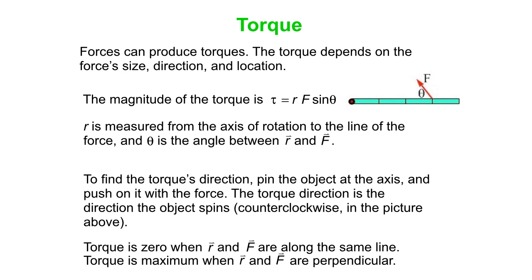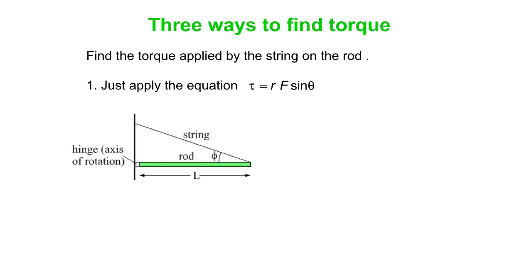Torque is zero when R and F happen to be along the same line, and you maximize your torque when R and F are perpendicular to each other. Now we're going to go over three equivalent ways to find the torque. Find the torque applied by the string on the rod — in other words, find the torque due to the force of tension. There are lots of other torques in the picture, but we're just going to worry about the one from the force of tension.